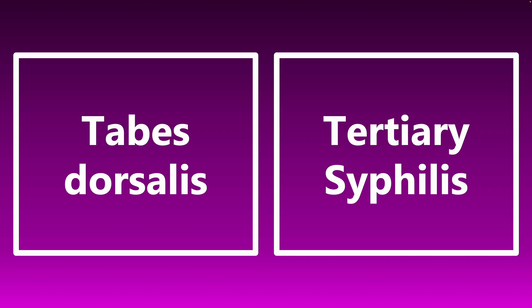Tabes dorsalis — hopefully you remember this from Step 1. It is associated with tertiary syphilis. Remember, in tabes dorsalis there is damage to the dorsal columns of the spinal cord.